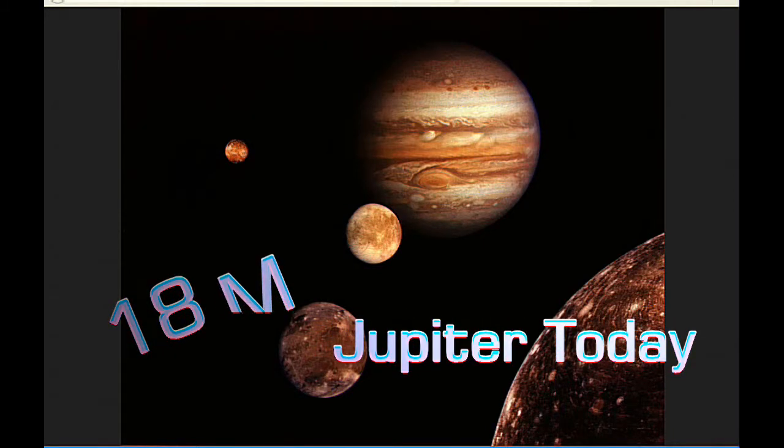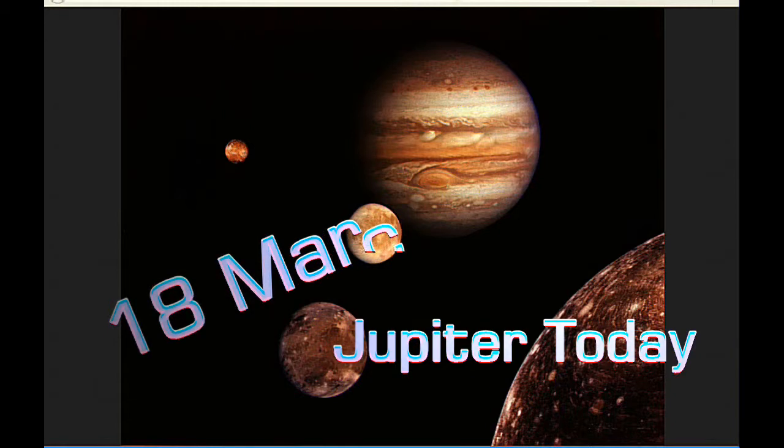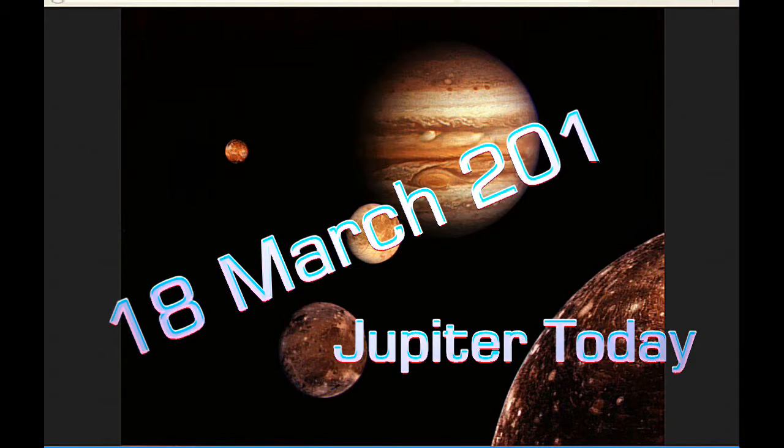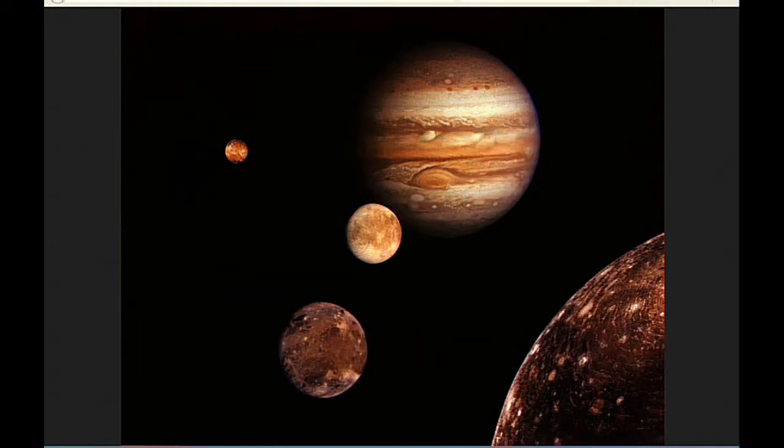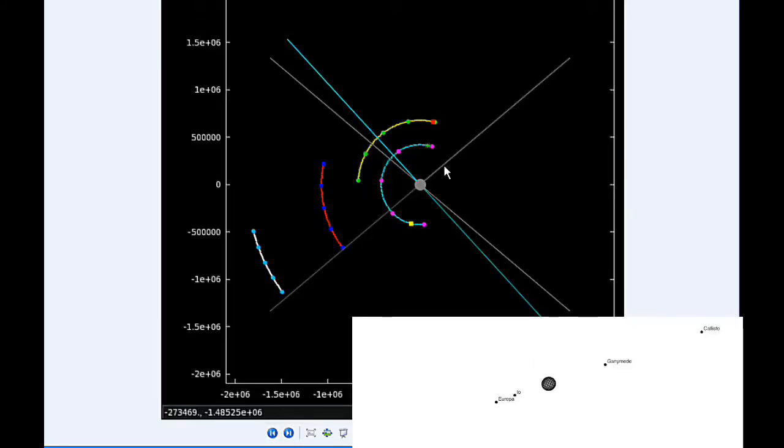This is Jupiter Today for the 18th of March 2015. Jupiter Today is a daily podcast focusing attention on the dynamic Jupiter system for the purpose of monitoring activity. At zero hours UTC, Io begins the day in quadrant two heading west, and Europa is doing the same, quadrant two heading west.